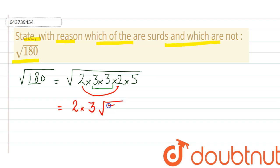So it is 6 root 5. Further it can't be simplified, so root will remain there, so it is a surd. Thank you.